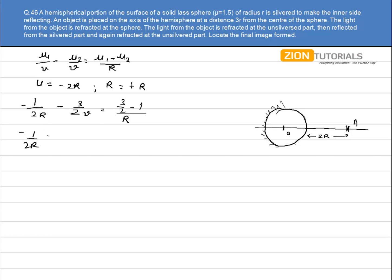So it comes out to be -1/2r = -3/2v. It is with a minus sign. Then because what I wrote over here is μ₂ - μ₁, I should write μ₁ - μ₂. So that is my mistake, I put a minus sign out here. So it will be -1/2r. So both of them get cancelled. So v comes out to be infinity. So the first image is formed at infinity.